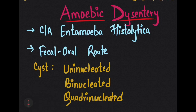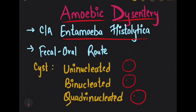There are three different types of cysts of Entamoeba histolytica: uninucleated cysts having a single nucleus, binucleated cysts having two nuclei, and quadrinucleated cysts having four nuclei.